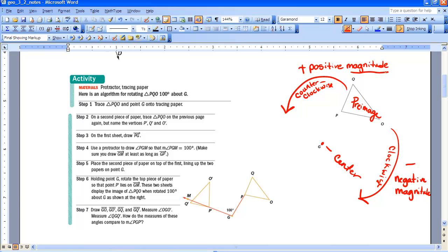Now, if you look down here, we have our triangle PQO. And as we stated above, the original triangle that I'm starting with is called the pre-image. The triangle that I end up with is called the image.